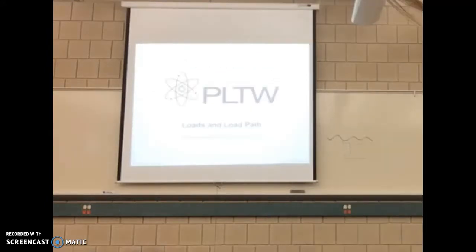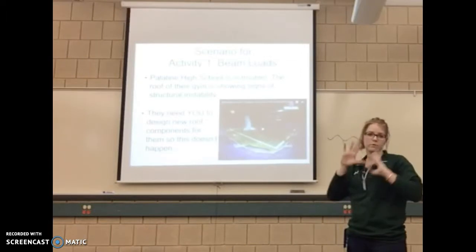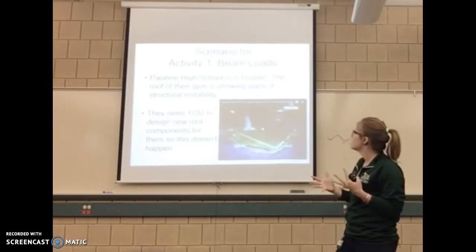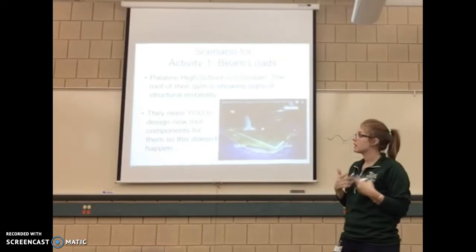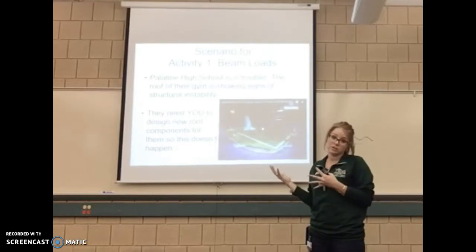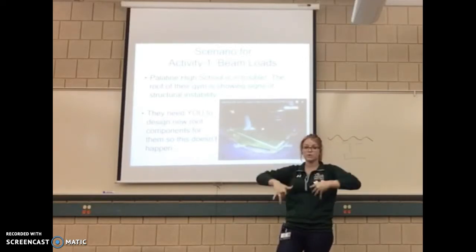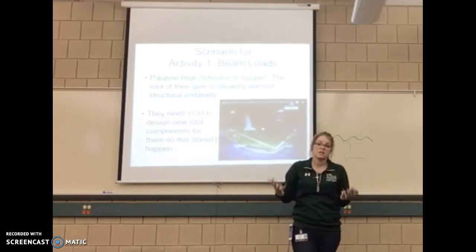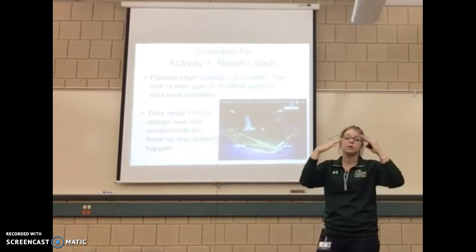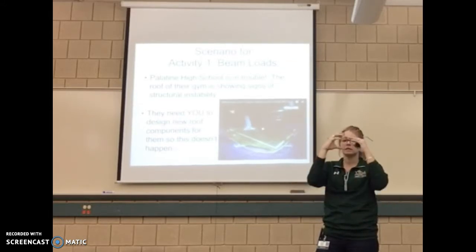Today we're going to learn about loads and load paths. The scenario is: Catholic High School's gym roof is showing signs of instability and could potentially collapse. A good connection to this is the Minnesota Vikings' old stadium — a few years back, snow was sitting on the roof and it was so heavy the roof actually collapsed. We're thankful no one was in the stadium, because as civil engineers we need to create a roof that can support the maximum amount of weight, especially with heavy snow in Minnesota.